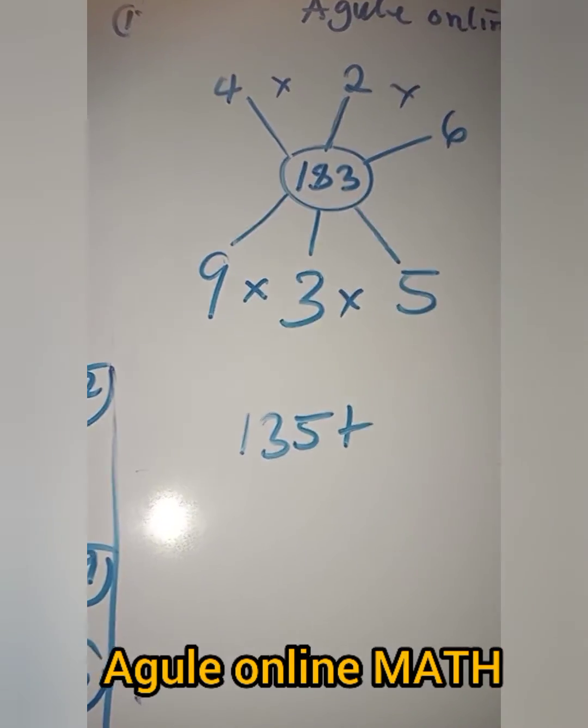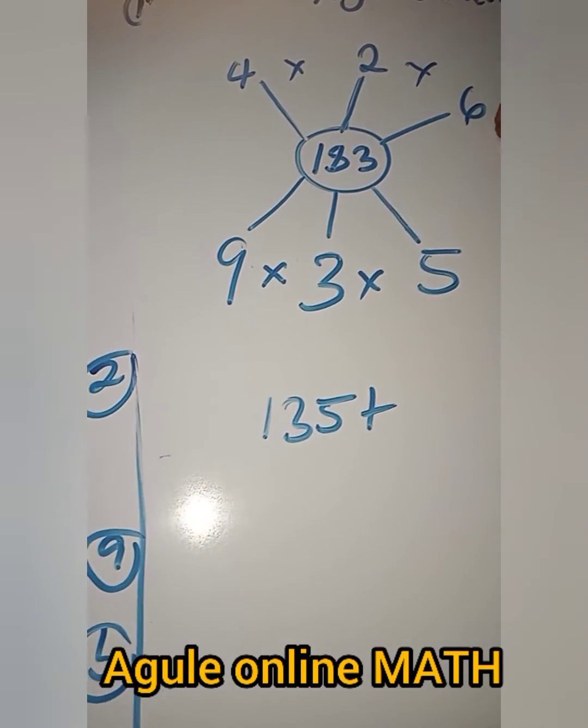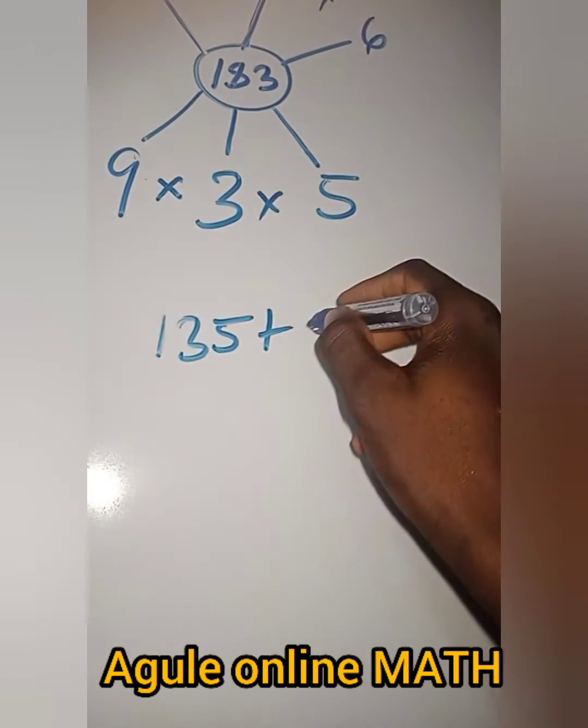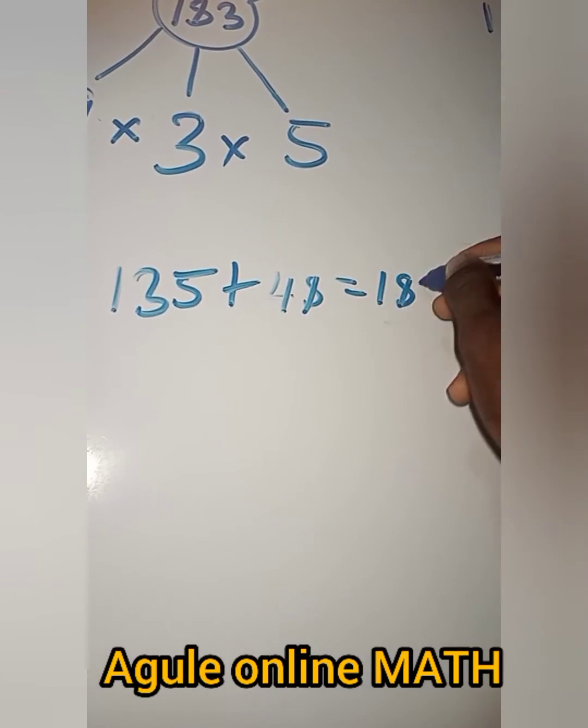5 times 2, that is 8. Then 8 times 6, that is 48. So plus 48. Your answer will be 183.